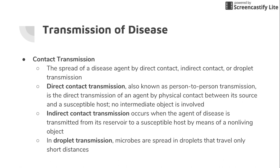Droplet transmission and airborne transmission are two different things. Droplet transmission travels a short distance, lands, and is done — for instance, if someone sneezes or coughs, the spit flies through the air, hits the ground, and doesn't move anymore. Droplets are produced through coughing, sneezing, laughing, and talking. One sneeze can produce up to 20,000 different droplets.